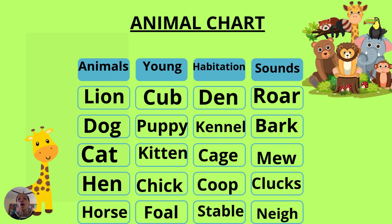A lion roars. The next animal is a dog. A dog's baby is called a puppy, and a dog lives in a kennel, and a dog barks — I'm sure everybody is familiar with the sound of dogs barking. The next animal is a cat. The baby of a cat is called a kitten. Cats live in a cage and the sound they make is meow.